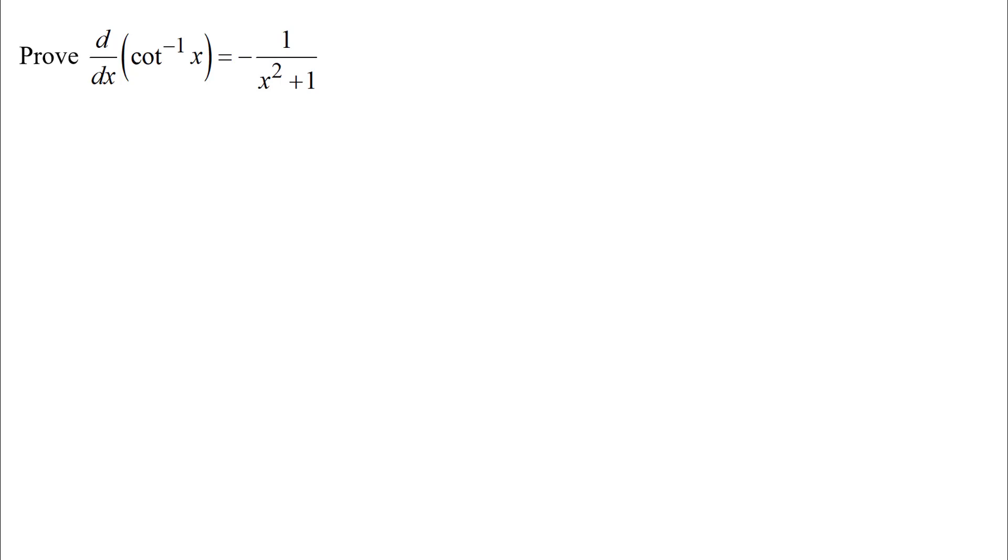Hi, in this video we're going to look at how to prove that the derivative of the cotangent inverse function of x, the derivative with respect to x of that, is negative 1 over x squared plus 1. So that's a derivative that we memorized a week ago but we were not yet able to prove it.